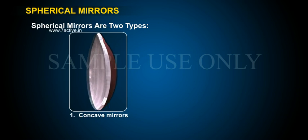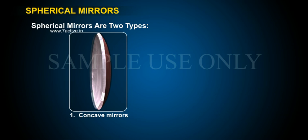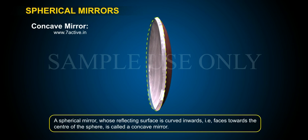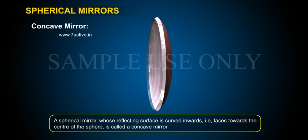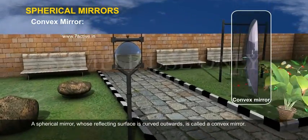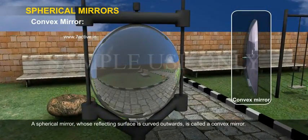Spherical mirrors are of two types: 1. Concave mirrors, 2. Convex mirrors. A spherical mirror whose reflecting surface is curved inwards, that is, faces towards the centre of the sphere, is called a concave mirror. A spherical mirror whose reflecting surface is curved outwards is called a convex mirror.